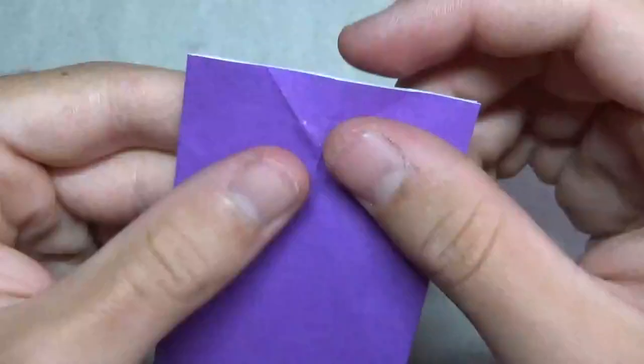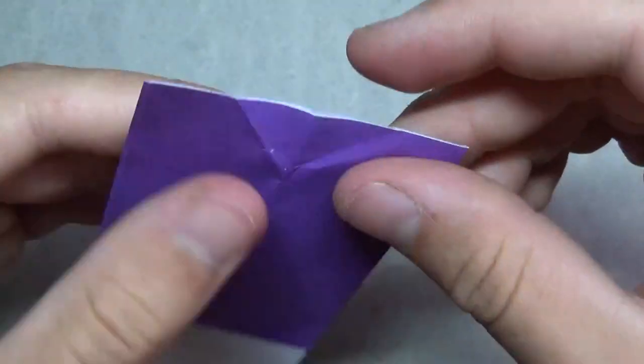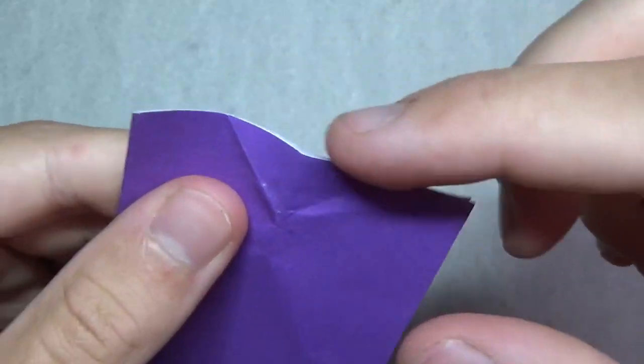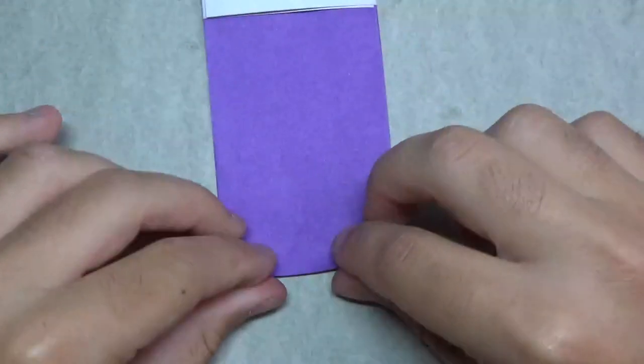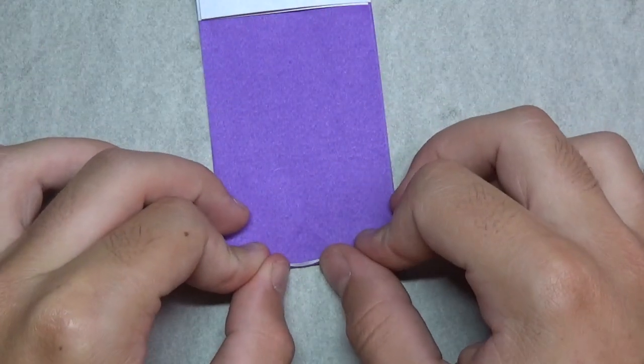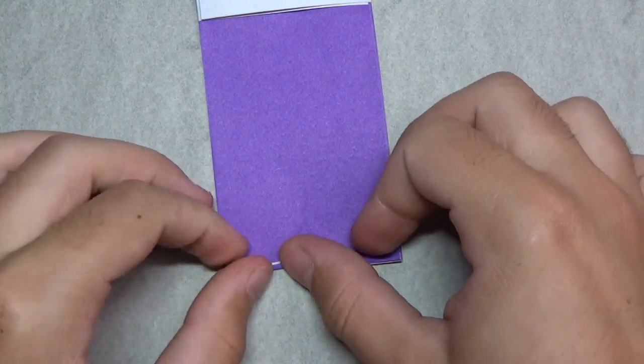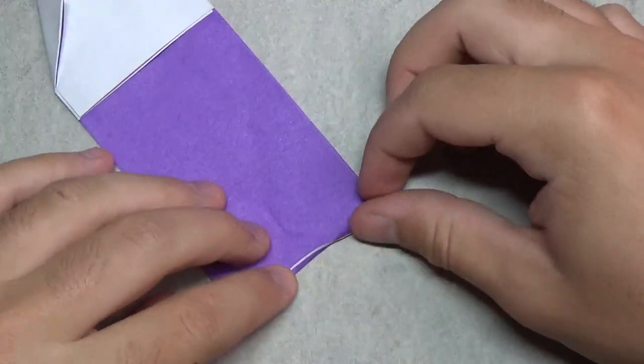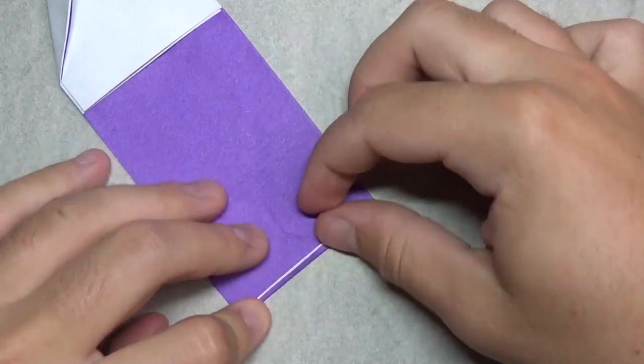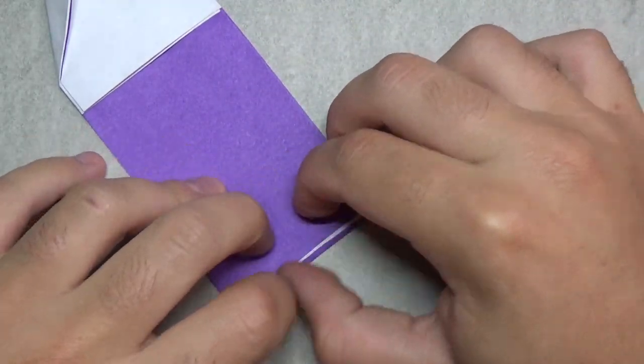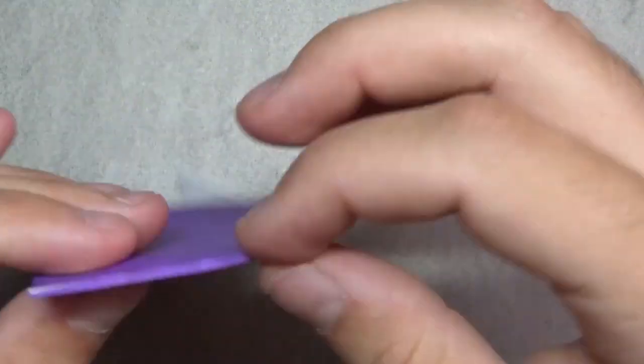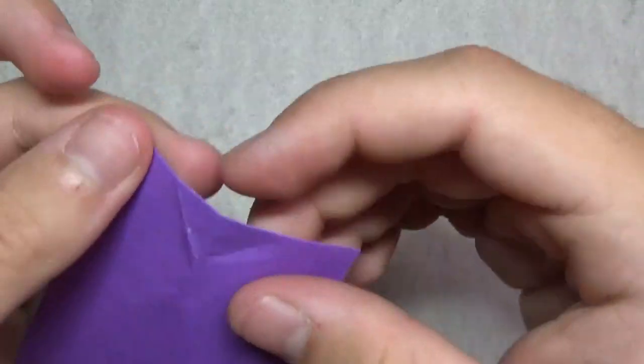And actually one more thing. You could do the next step if you want, but this is a raw edge right here, so I'm just going to kind of eliminate that. Just fold this edge up just a tiny bit, maybe a millimeter or so. Just like that. That's only if you want it to be a folded edge.